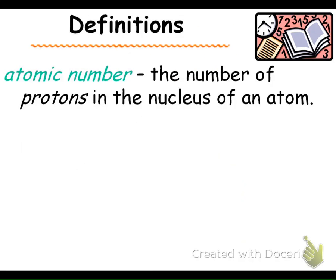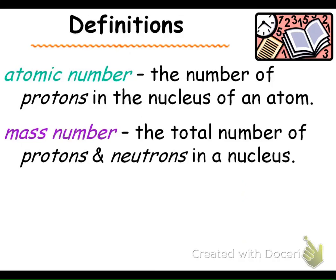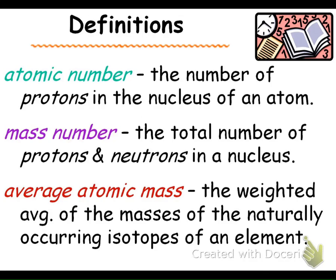The atomic number is just the number of protons in the nucleus of an atom. The mass number is the total number of protons and neutrons in a nucleus. The average atomic mass is the weighted average of the masses of the naturally occurring isotopes of an element. Those are the key definitions you need to know in our atomic structure section.